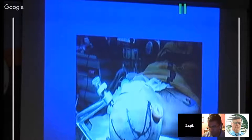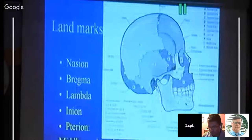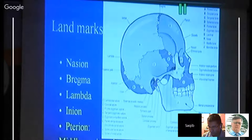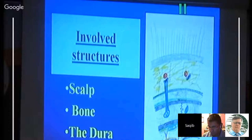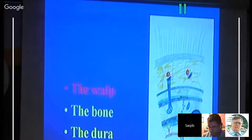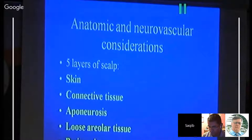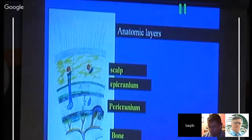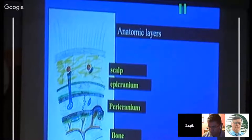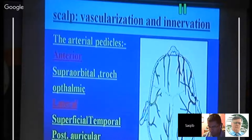The basic bony landmarks are what you need to remember to plan a good incision. The basic structures involved are the scalp, dura, and bone. The scalp is made of five layers: skin, connective tissue, epicranial aponeurosis (galea), loose areolar tissue, and pericranium. You must also know the exact arterial and neurological supply of the structures you want to cut.